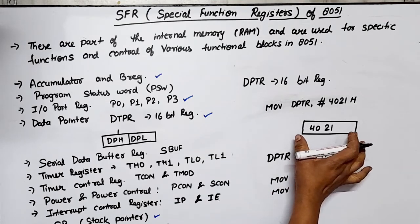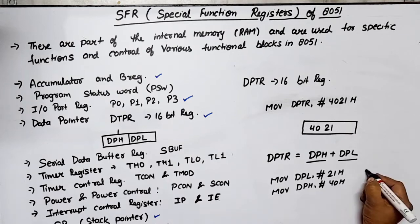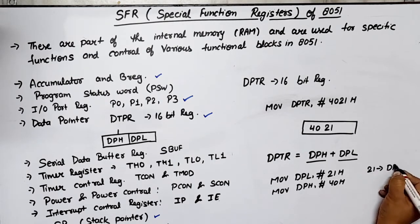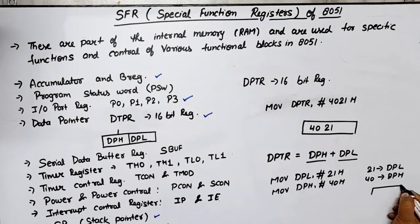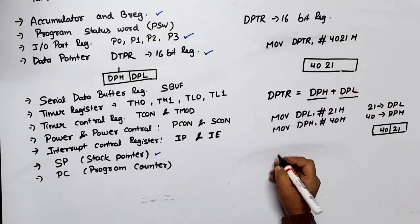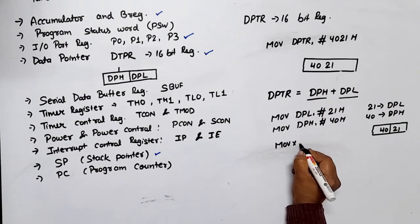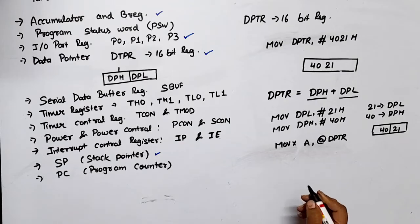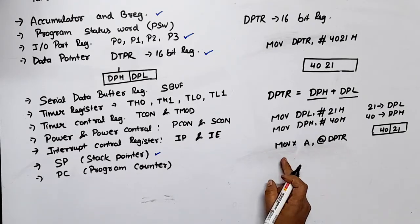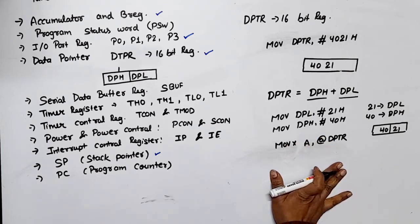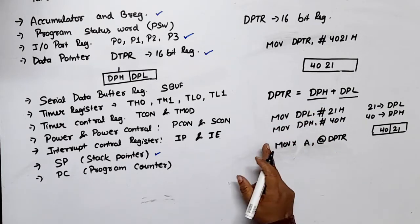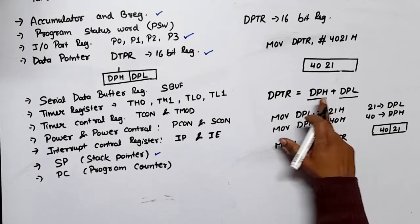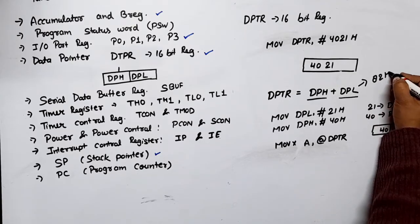In this case, 16-bit data is loaded into the data pointer: 21h is first loaded into DPL, then 40h is loaded into DPH, and finally DPTR's value is 4021h — same result. To load data from that memory location into the accumulator, we write: MOVX A, @DPTR — meaning load the content of the location addressed by DPTR into the accumulator. The address of DPL is 82h and the address of DPH is 83h.